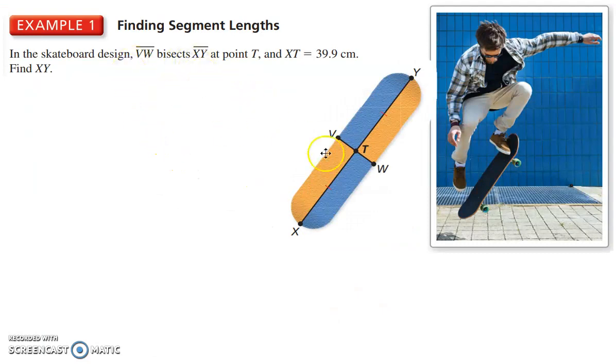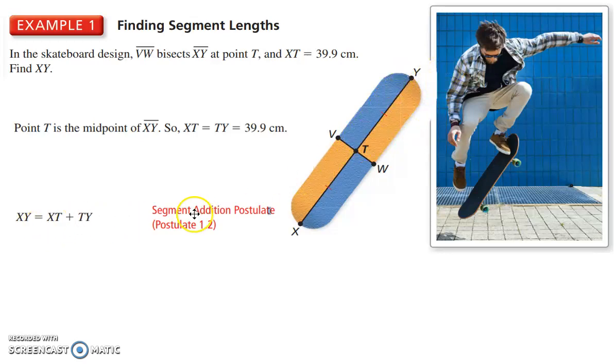If we want to find a segment length, here we have a skateboard design and we know that VW bisects XY. XY is the length of the skateboard, we want to find that length. We know that XT, so half of it from the outside to the center is 39.9 centimeters. So first off, determining this is the midpoint, we know that XT is the same as TY. Both of those are 39. So the segment addition postulate tells us that adding these two together gives us the total length.